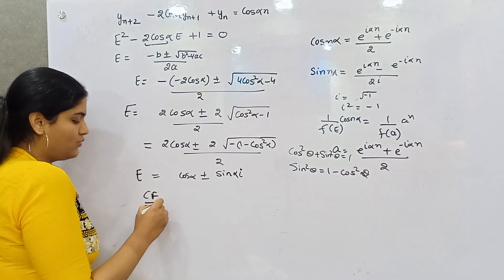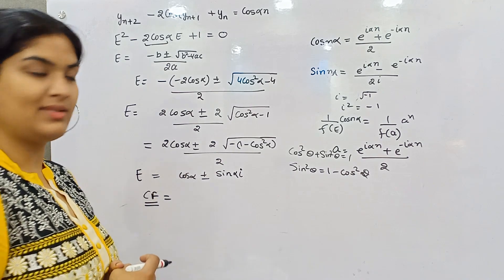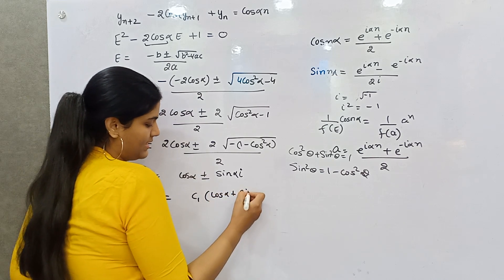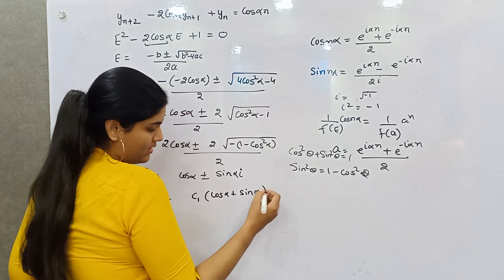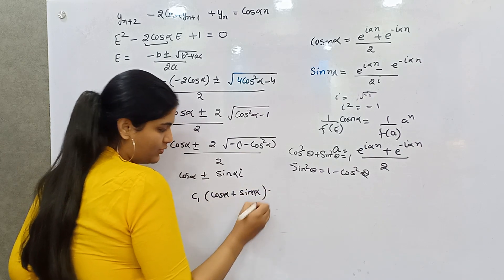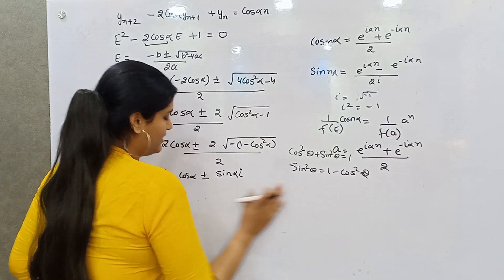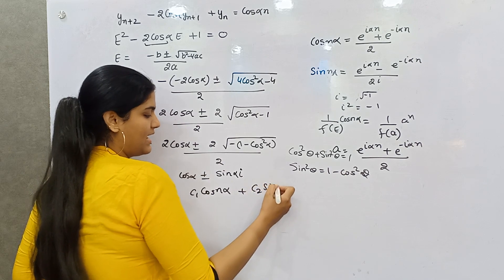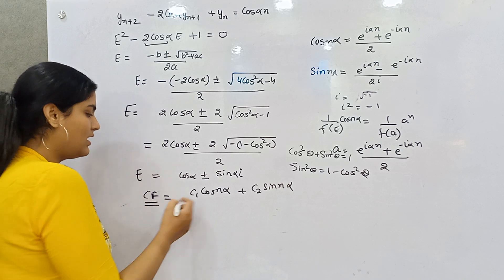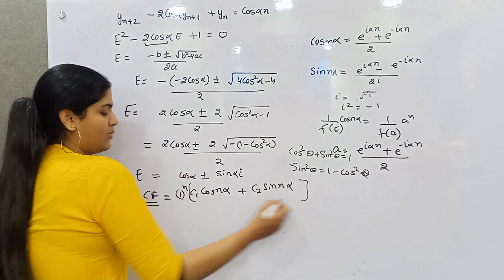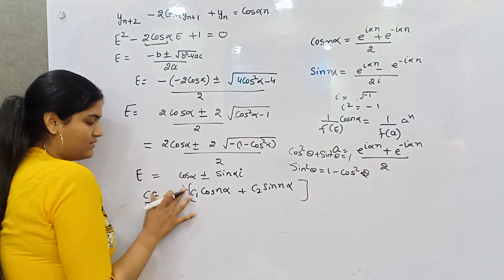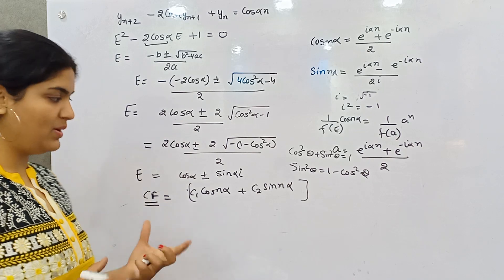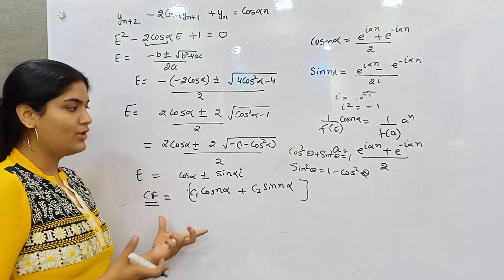With complex roots, you know the formula for the complementary factor. It becomes C1·cos(nα) + C2·sin(nα). You can include 1 raised to power n, but since n is positive, 1^n = 1 and it can be removed. This is your complementary factor.